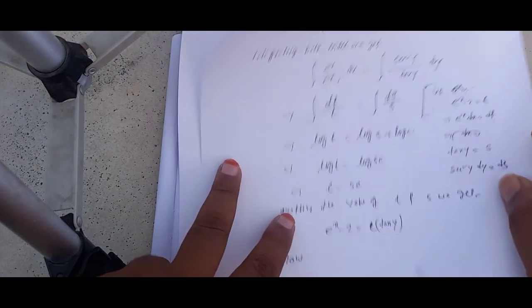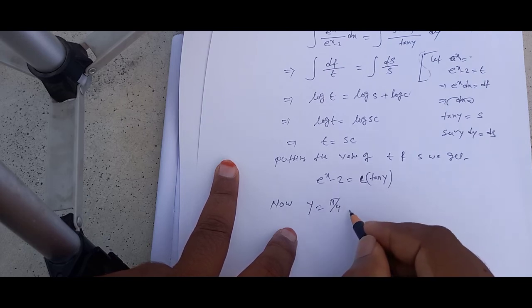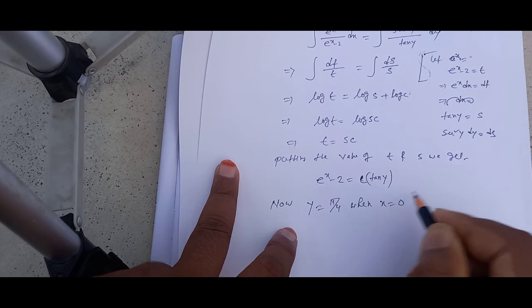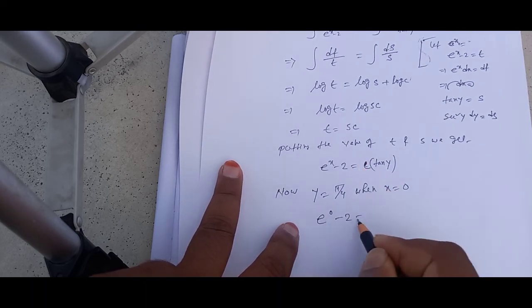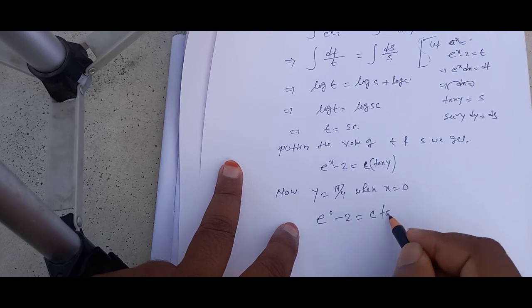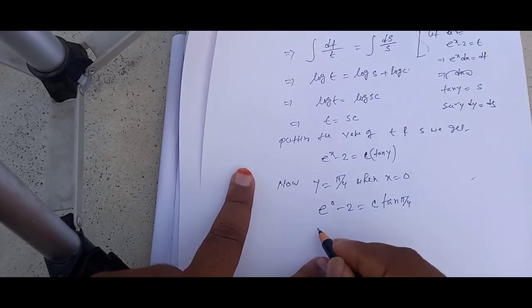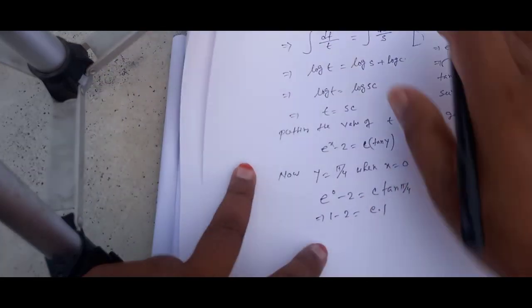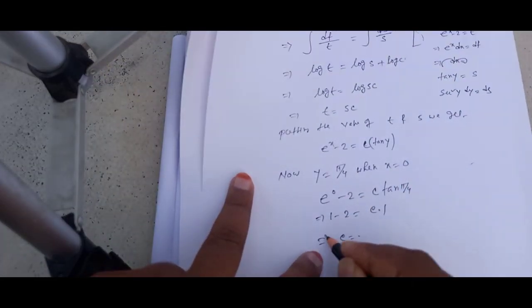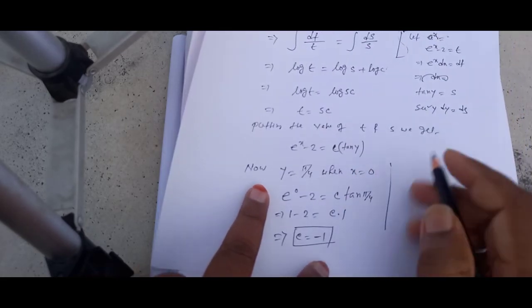Given y equals pi by 4 when x equals 0. Substituting: e to the power 0 minus 2 equals c times tan of pi by 4. Since tan of pi by 4 equals 1 and e to the power 0 equals 1, we get 1 minus 2 equals c times 1, therefore c equals minus 1.